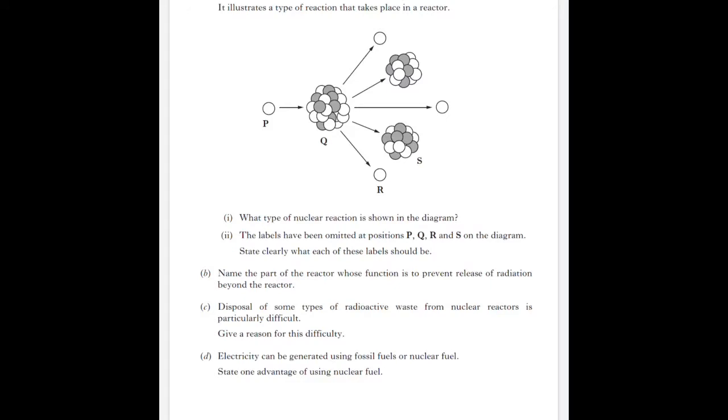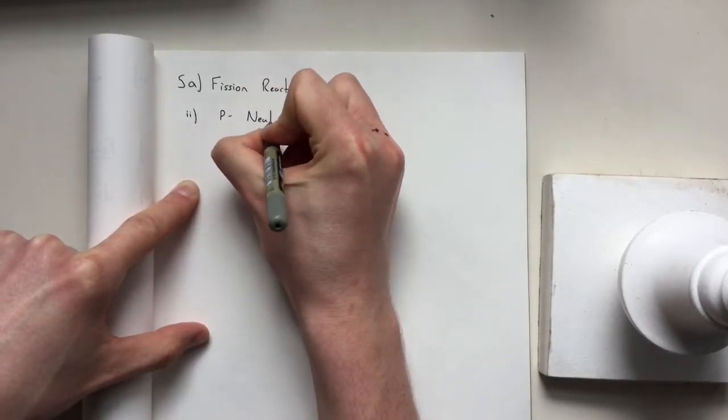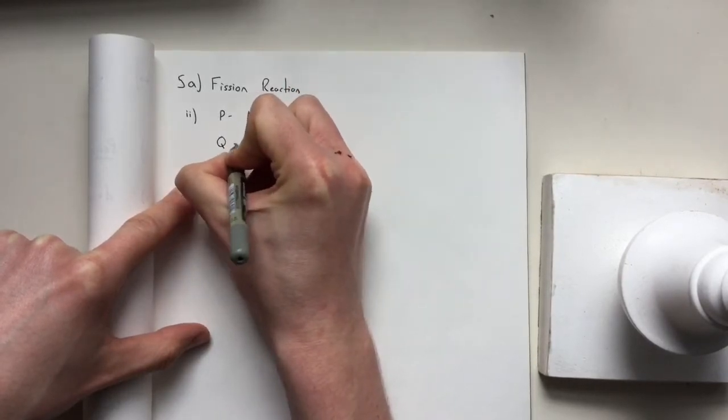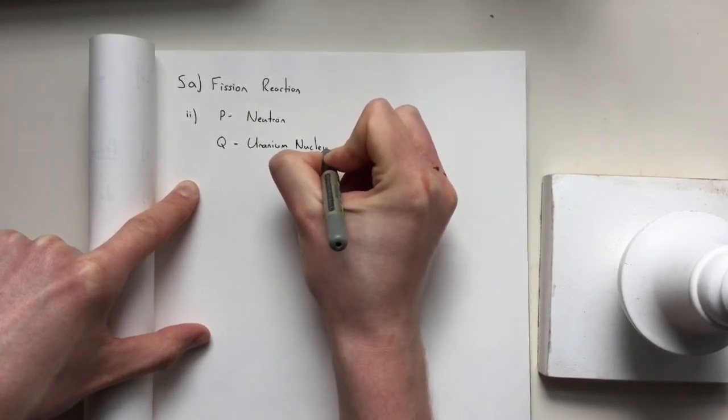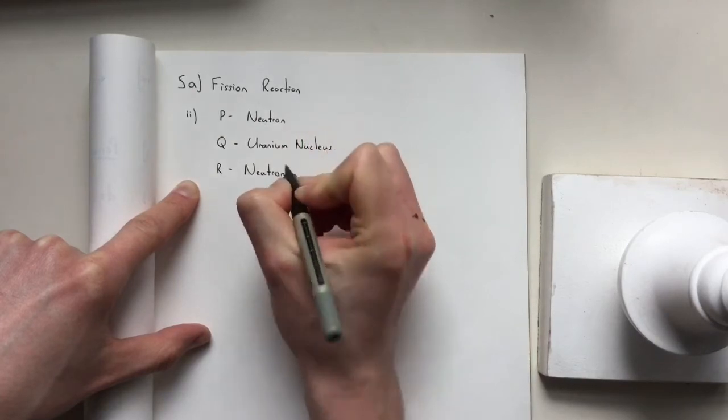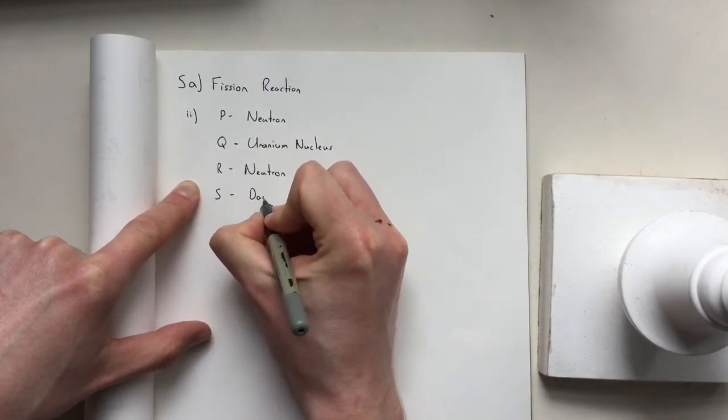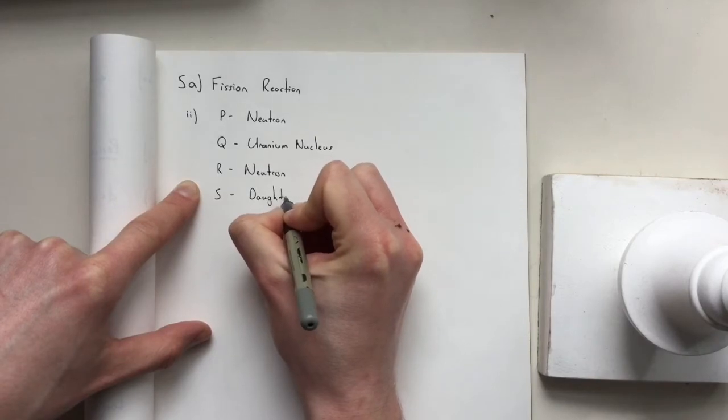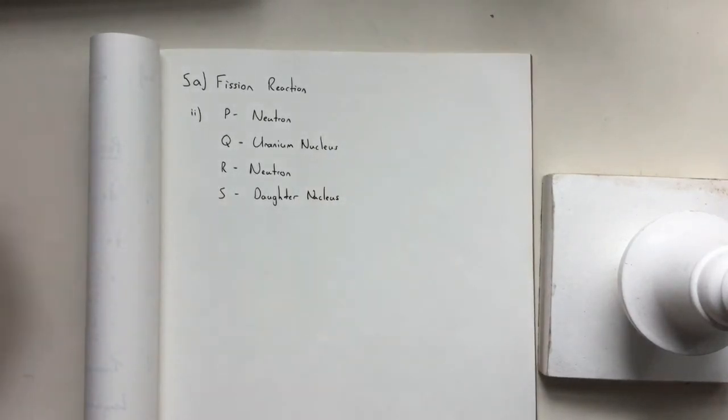For part two, it's asking us to label P, Q, R, and S. So P we should know is a neutron. Q is our uranium nucleus, which we should all know is used in nuclear fission. R is a neutron because it releases neutrons which can then start a chain reaction. And S is what we call daughter nuclei or daughter nucleus. That's your four different ones there.